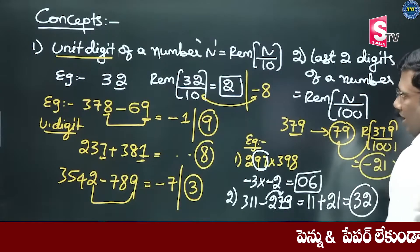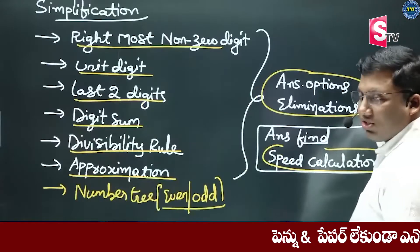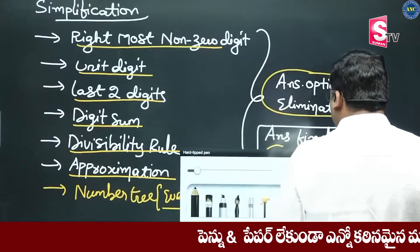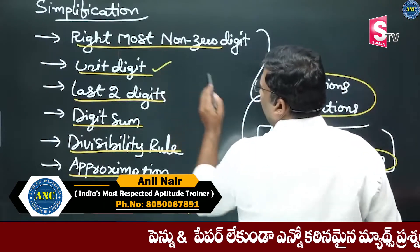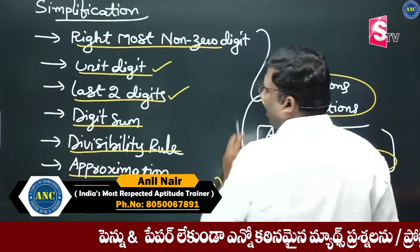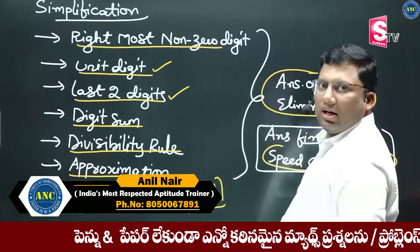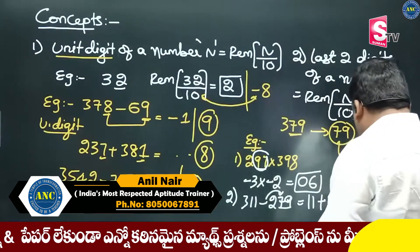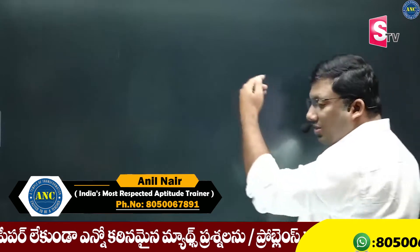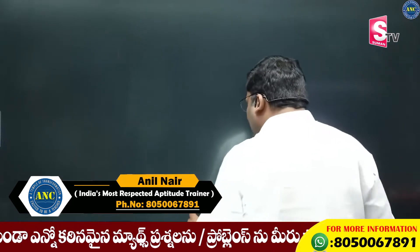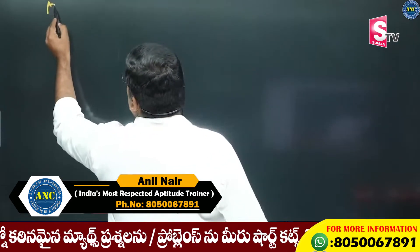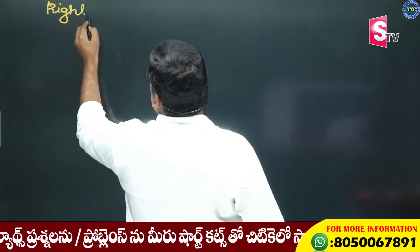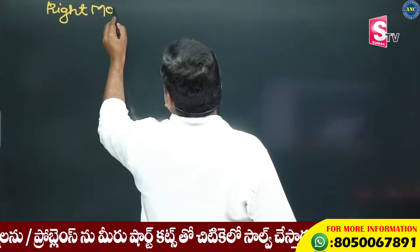Second slide. We are going to discuss this with the unit digits. The last two digits will be the same. The rightmost non-zero digits — focus on this. If I say the order, I will write the order. Rightmost non-zero digits. It's very important.